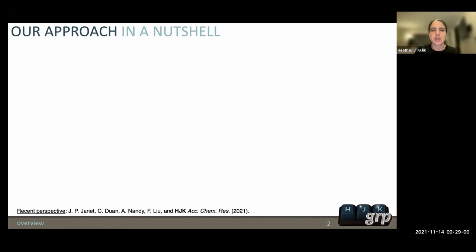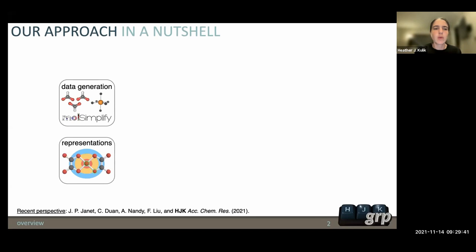What we do is we aim to do chemical discovery in challenging material spaces, which typically refers to transition metal complexes with open shell transition metal centers, as well as metal organic frameworks. Usually we start at a point where we need to do some degree of data generation, and my group develops a code known as MolSimplify which automates the generation of data for transition metal complexes and chemistry.